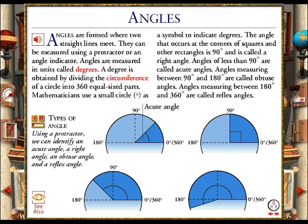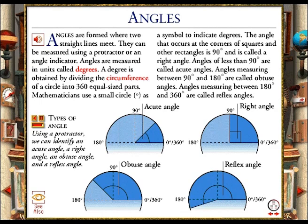This is an example of an acute angle, that is, one of less than 90 degrees. This is a right angle, which is an angle of precisely 90 degrees. This is an obtuse angle, which is an angle between 90 degrees and 180 degrees. And this is a reflex angle, which is an angle greater than 180 degrees but less than 360 degrees.